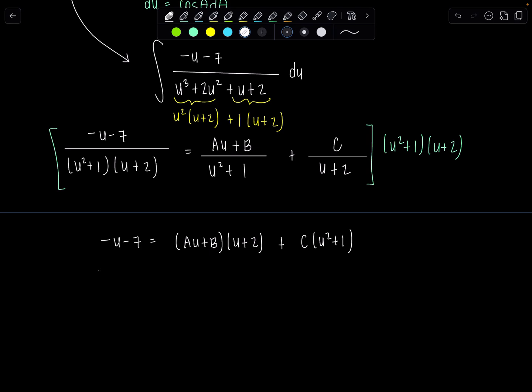And then now we're just going to distribute. So this is a u squared plus 2a u plus b u plus 2b plus c u squared plus c.